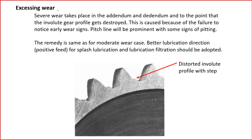Excessive wear continues from moderate wear and becomes more severe — it occurs in the addendum and dedendum parts. If moderate wear has changed the gear shape so it is no longer involute, there will be misalignment and vibration, leading to excessive wear. Excessive wear destroys the involute gear profile. It is caused by failure to notice early wear signs; the pitch line becomes prominent and some pitting will also occur.